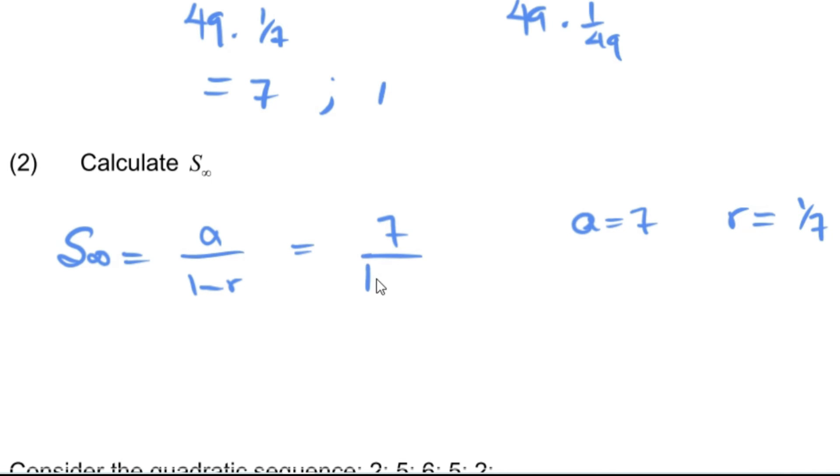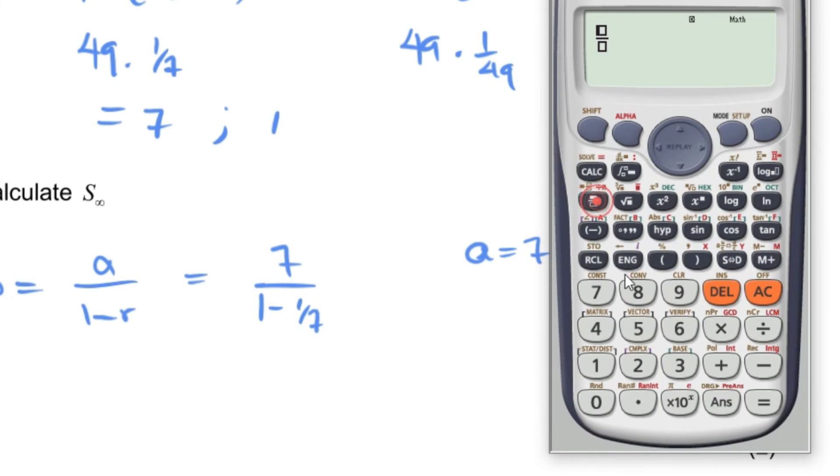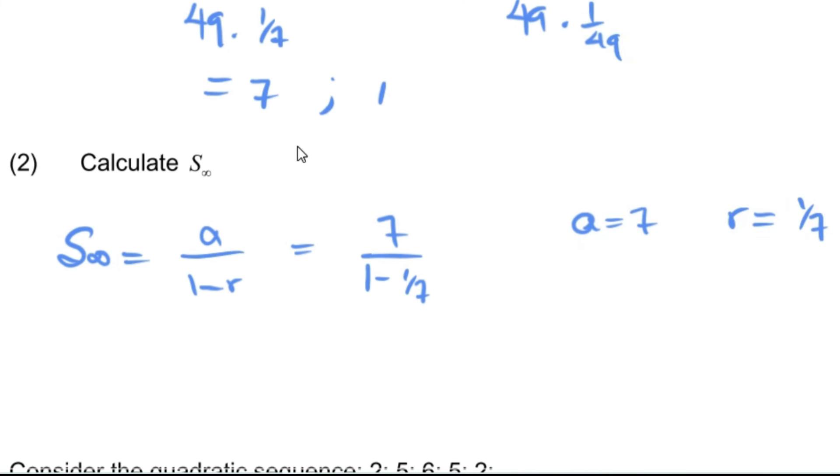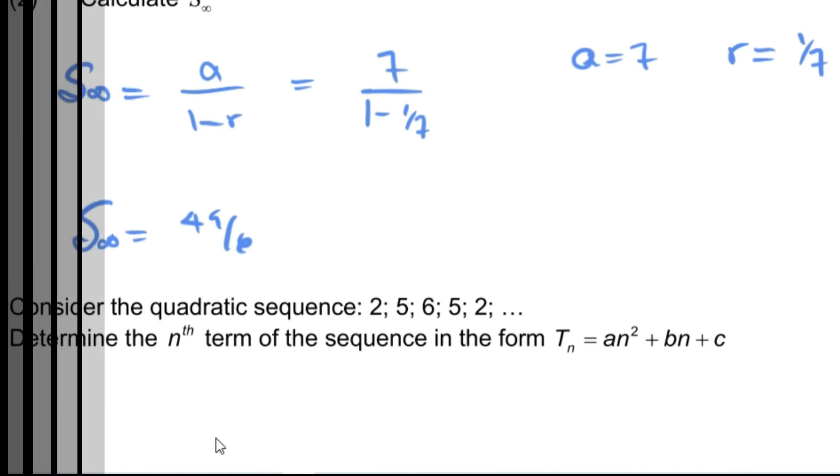This here would be, and if you put all this in the calculator, 7 divided by 1 minus 1 over 7, and that gives you 49 over 6. So the sum to infinity equals 49 over 6. And that's a question 2.